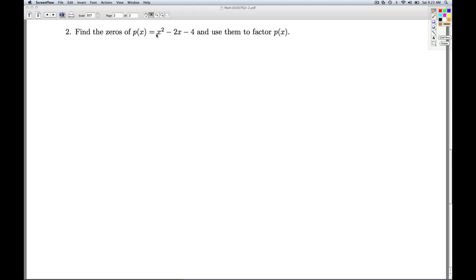Alright, number 2, we're turning the tables. Instead of factoring the polynomial to find the zeros, we're going to find the zeros and use them to factor the polynomial. And so the tool here we're going to be using is the factor theorem, which says that x equals c is a 0 of the polynomial function p, if and only if x minus c is a factor of the polynomial p of x. So let's find the zeros.